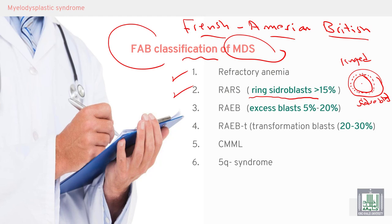Refractory anemia with excess blasts: 5% to 20% blasts — so it is not acute leukemia, it is refractory anemia with excess blasts. Refractory anemia with excess blasts in transformation has blasts from 20 to 30%. This classification was done before the WHO classification, and the cutoff value for diagnosis of acute leukemia at that time was 30% blasts.